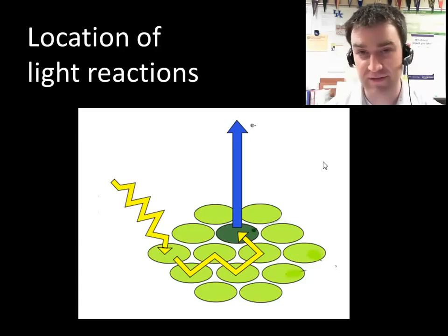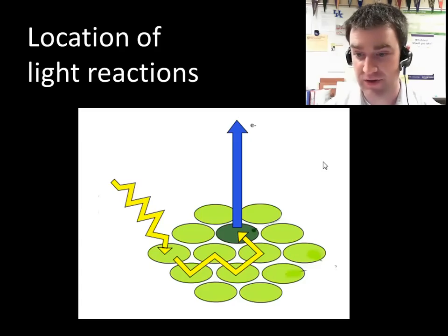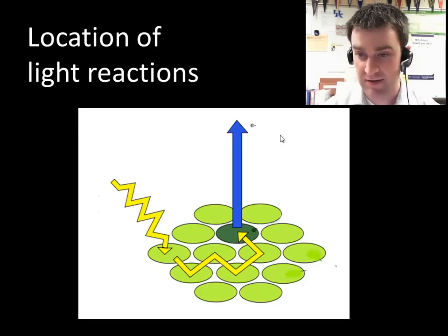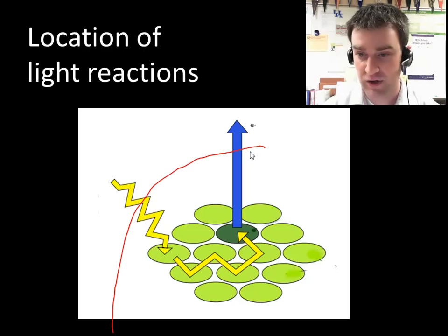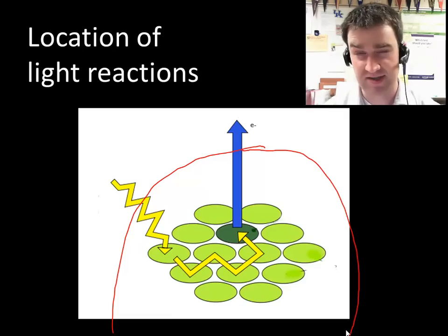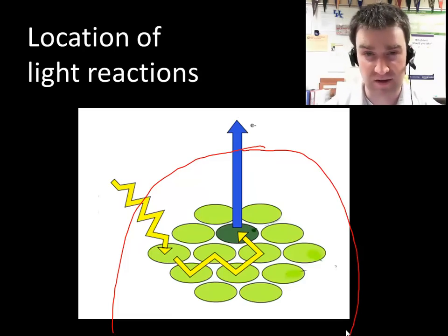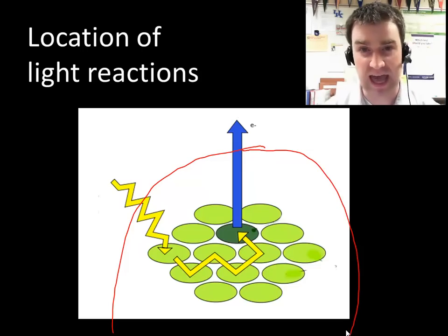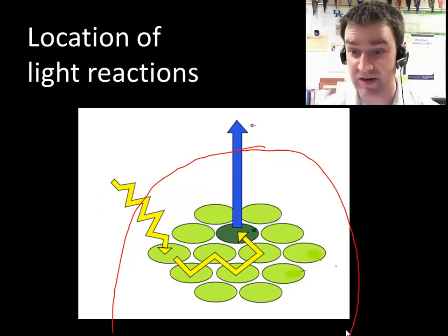Recall from part one that these little green circles represent pigments — pigment molecules embedded within a larger protein photosystem. When you look at the next picture, all you're going to see is the giant photosystem, but think of the pigment molecules inside as actually capturing the light energy.